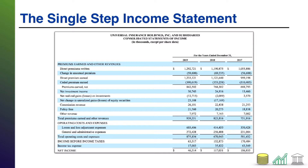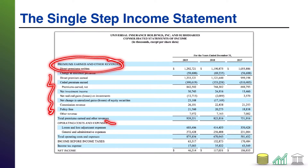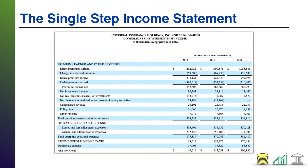In a single-step income statement, as you see here for an example, you typically have a section for your revenues, where you list all the revenues of the company. You have a section for your expenses, where you list all the expenses of the company, and then you net those two together to come up with net income. Single-step: here's revenue, here's expense, here's net income, and you're done.